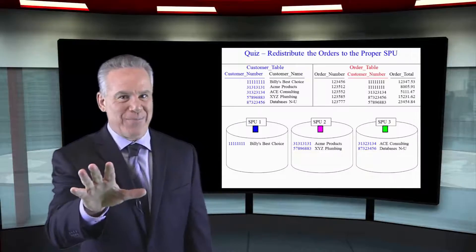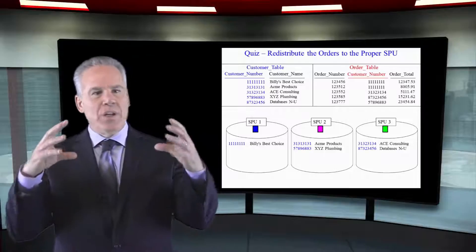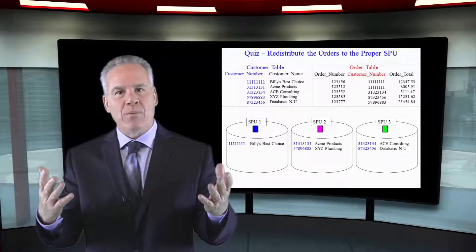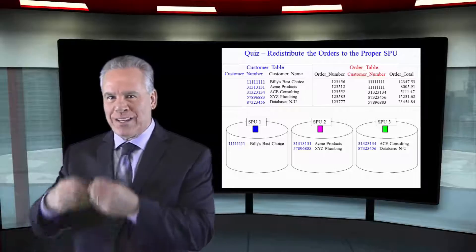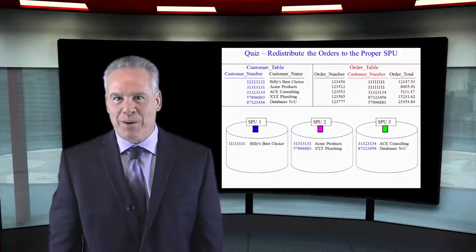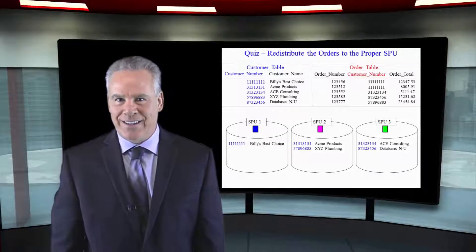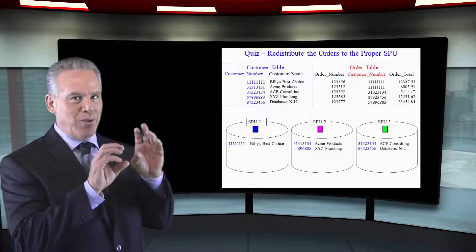And here's another example for you. Take a look at this. Here we're going to join the customer table to the order table on customer number equals customer number. And as you can see right here, we have already laid out the customer table because its distribution key is customer number. But the order table, its distribution key is order number. What's going to happen when Netezza decides to redistribute the order table?